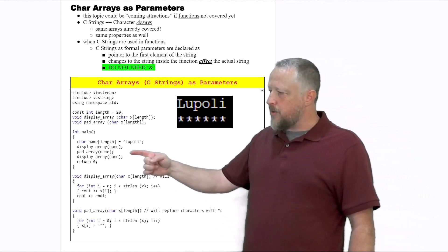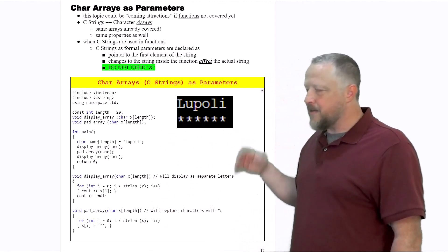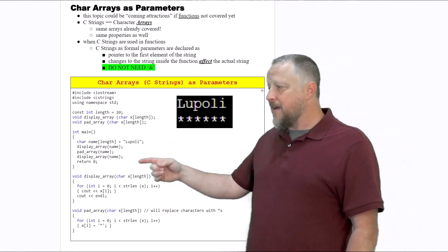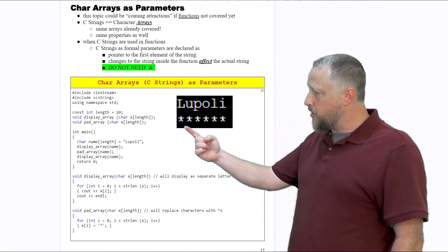So that's how I get away with the pad_array, using that for loop, doing the same thing over and over again until I hit the strlen. And then I actually go back to display_array again, and now it's going to display what we just put in there.